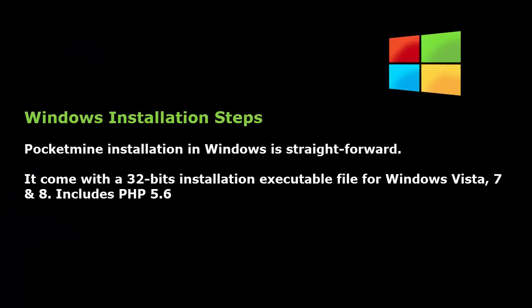Windows installation steps. Pocket Mine installation in Windows is straightforward. It comes with a 32-bit installation executable file for Windows Vista, 7, and 8. Includes PHP 5.6. That is good news for Windows users.